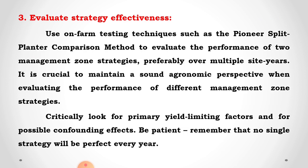The third step is to evaluate strategy effectiveness. Use on-farm testing techniques such as the pointer split-planter comparison method to evaluate the performance of two management zone strategies, preferably over multiple site years. It is crucial to maintain a sound agronomic perspective when evaluating different management zone strategies. Look critically for the primary yield-limiting factors and possible confounding effects. Be patient — no single strategy will be perfect every year.